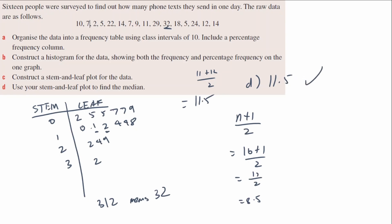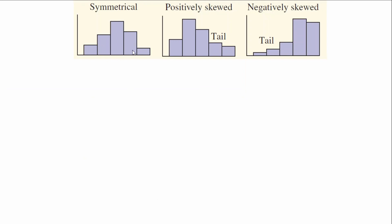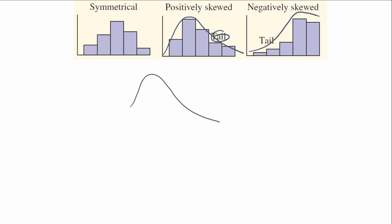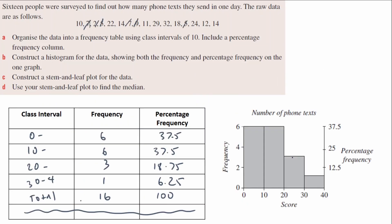Our last goal for today is identifying graphs as symmetrical, positively skewed, or negatively skewed. Symmetrical means the left and right look the same — if you fold it in half, both sides are roughly the same image. Positively skewed means it's high on the left and goes down to the right, so there's a tail on the right-hand side. Negatively skewed is the opposite — the tail is on the left.